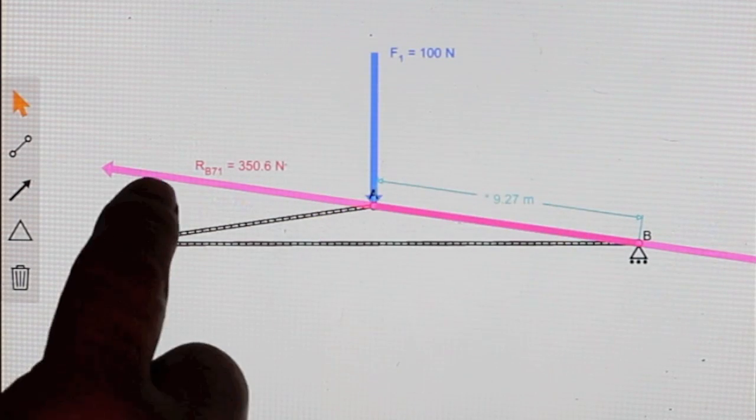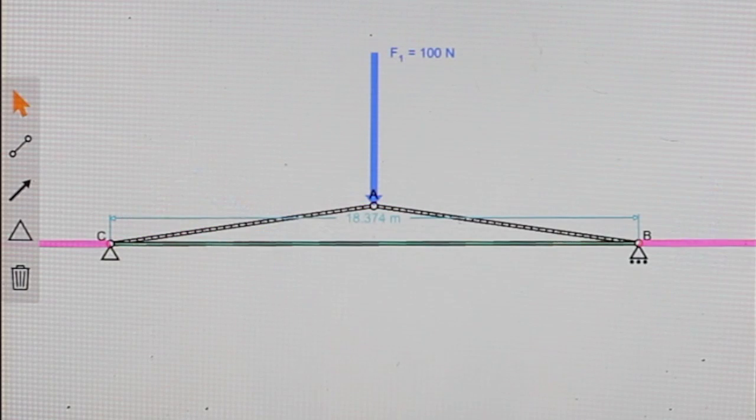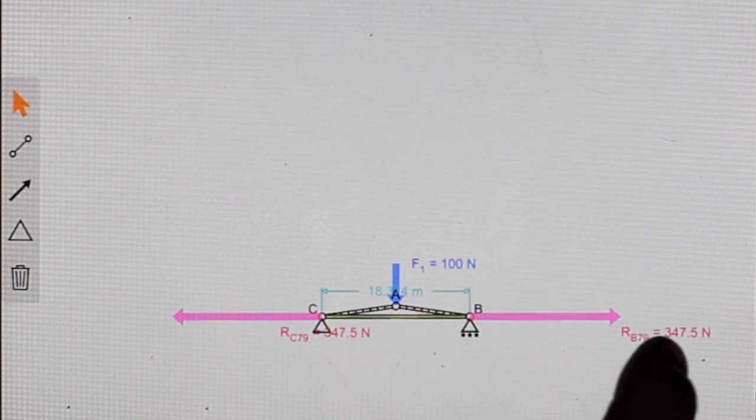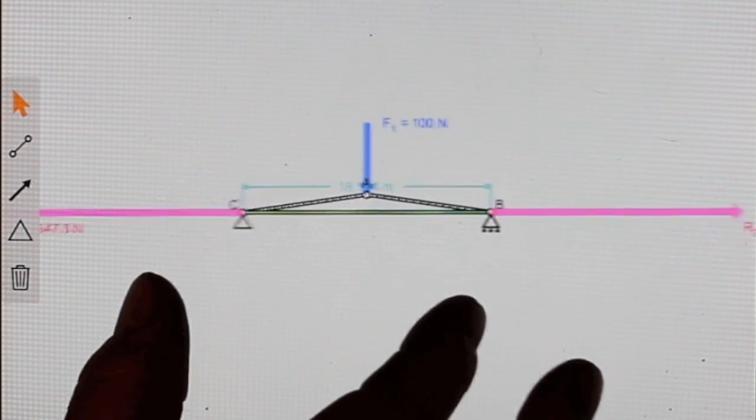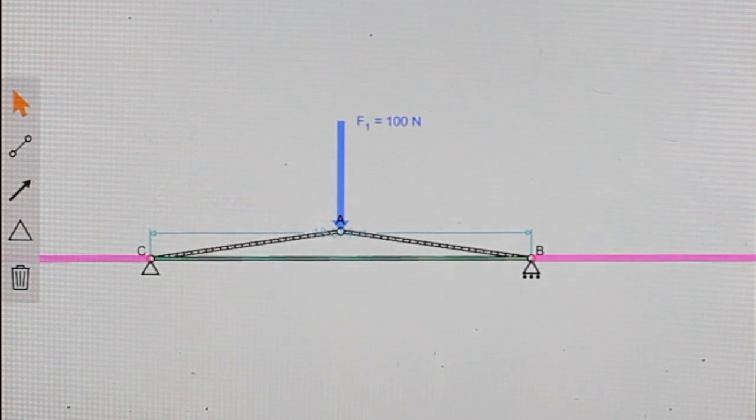...and that's given us a compression of 350 Newtons through here and a tension across here—see the arrows point out—a tension of 347 Newtons. So it's about three and a half times the force that's applied to the top of the pentagon.